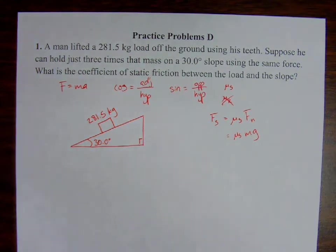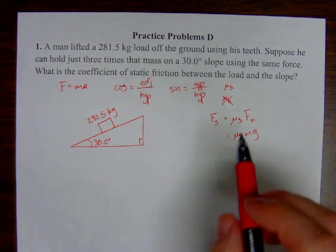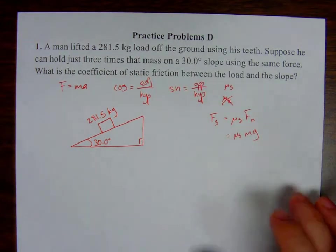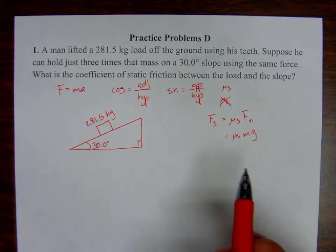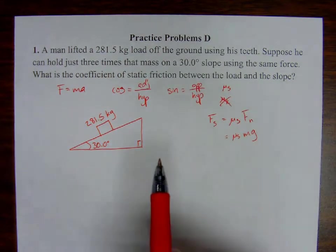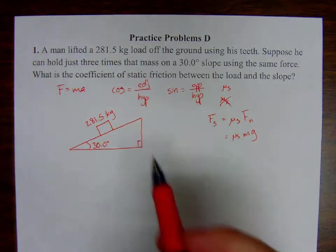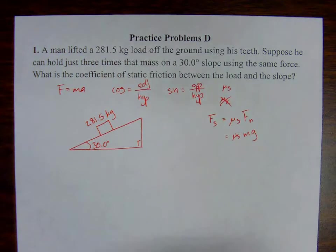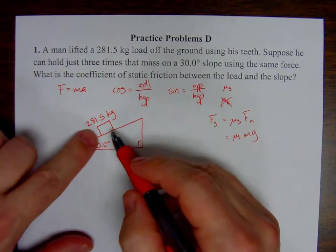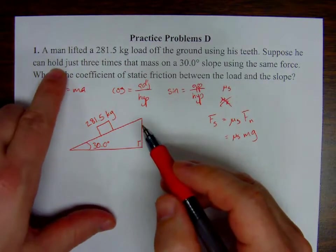Now, the reason that it's important that we identify the mass is because that's going to help us calculate the force that's being applied. Now, let's go back to our understanding of net force and when it is zero. This thing isn't moving. It can hold just three times the mass, hold it there. That means movement is zero. And so, if there's no acceleration, if there's no change in motion, that means that net force is equal to zero.